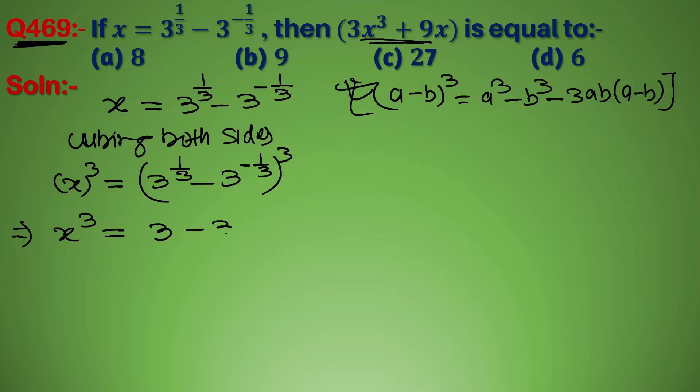तो यह होगा 3 minus 3 to the power minus 1 minus 3 into 3 to the power 1 by 3 into 3 to the power minus 1 by 3.